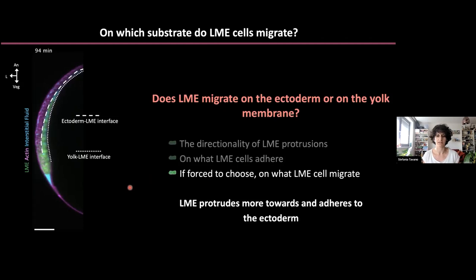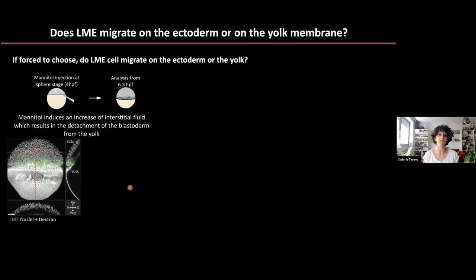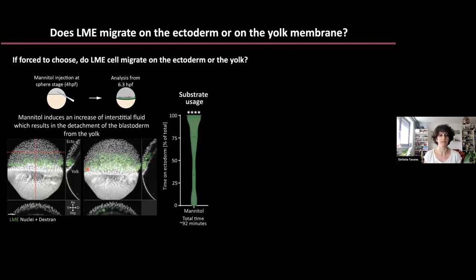For the third analysis: how do we force cells to choose one substrate over the other? In zebrafish, we can inject mannitol — an inert sugar — which increases the space between the blastoderm and the yolk membrane, as you can see in this image, without changing the migratory behavior of the cells. Using this injection together with live imaging, we can follow the cells and see which substrate they use. As you can see in the snapshots and quantification, cells prefer to use the ectoderm as substrate, consistent with the other analyses.